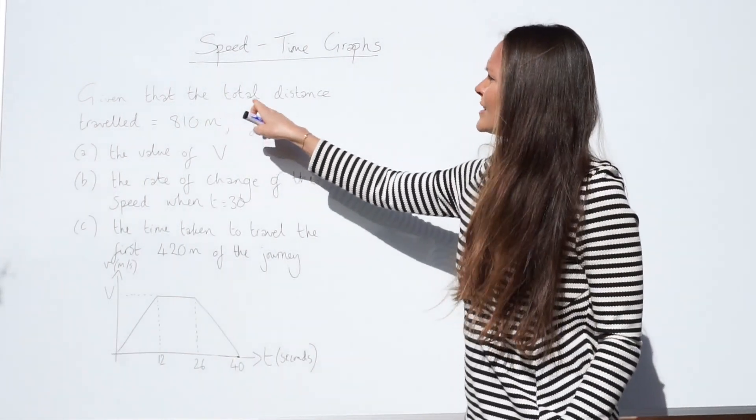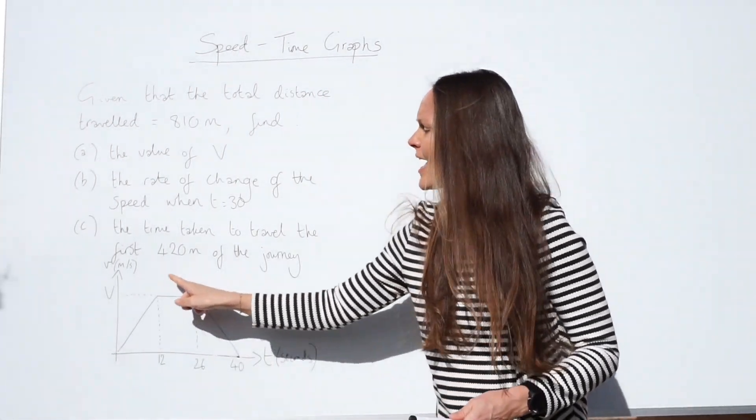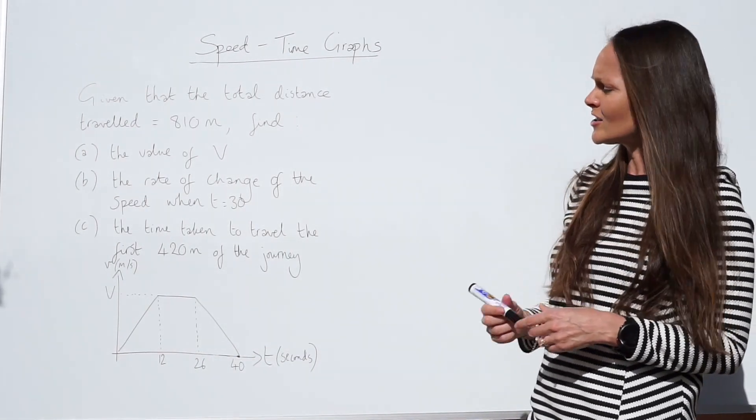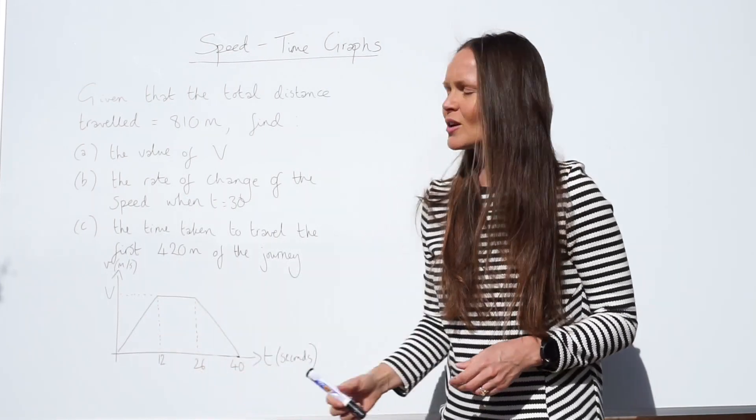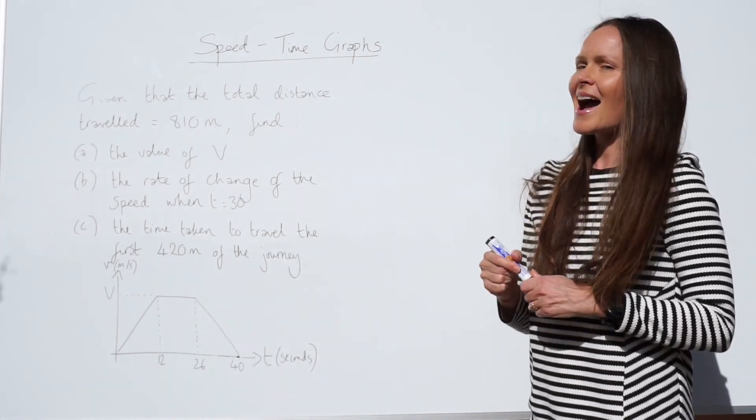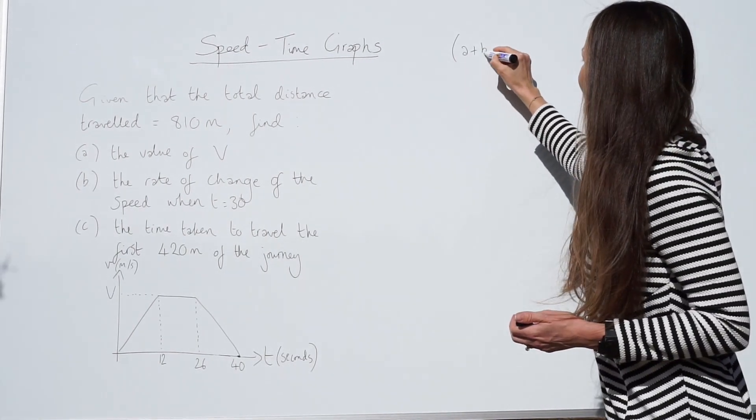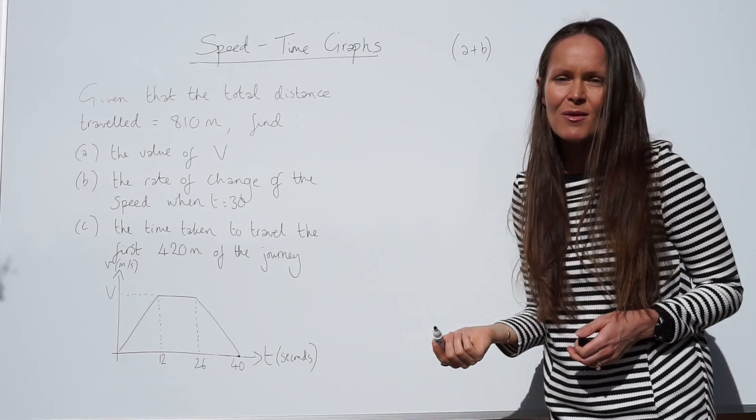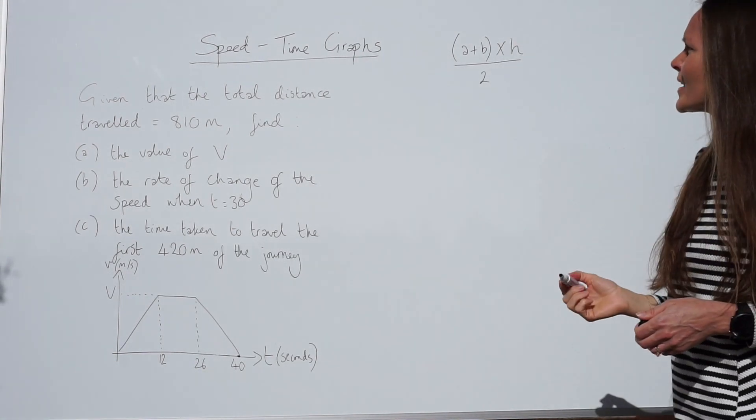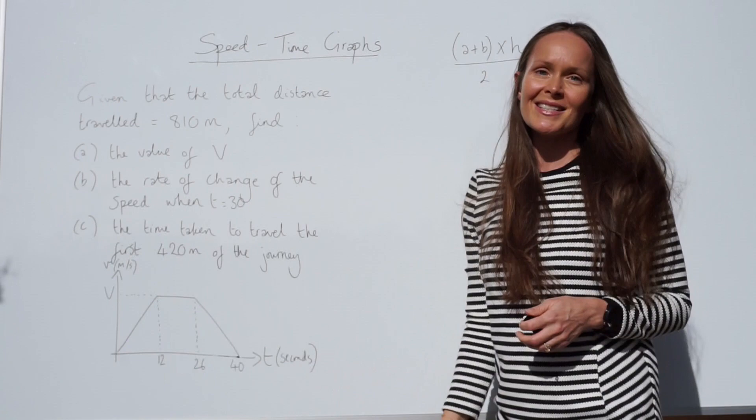So if we know the total distance is 810 metres, we know that the total area of this shape is also 810. This shape is a trapezium, it's a quadrilateral with one pair of parallel sides, and the formula to work out area of a trapezium is to add together the parallel sides, I'm going to call them A and B, multiply by the vertical height, and divide by 2. So I'm going to apply that formula to this trapezium here.